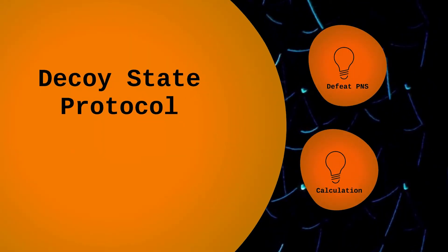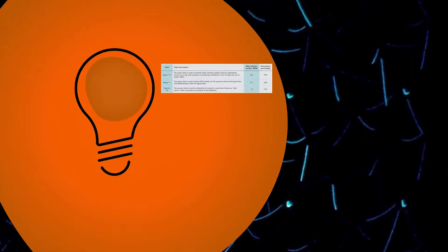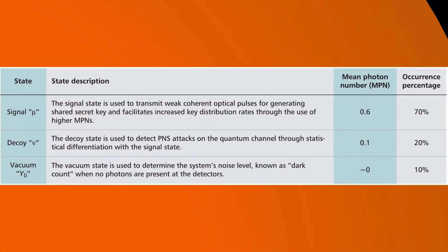In response, the decoy state protocol is introduced to mitigate these attacks. During quantum exchange, Alice randomly generates optical pulses in one of three states: signal, decoy, or vacuum.